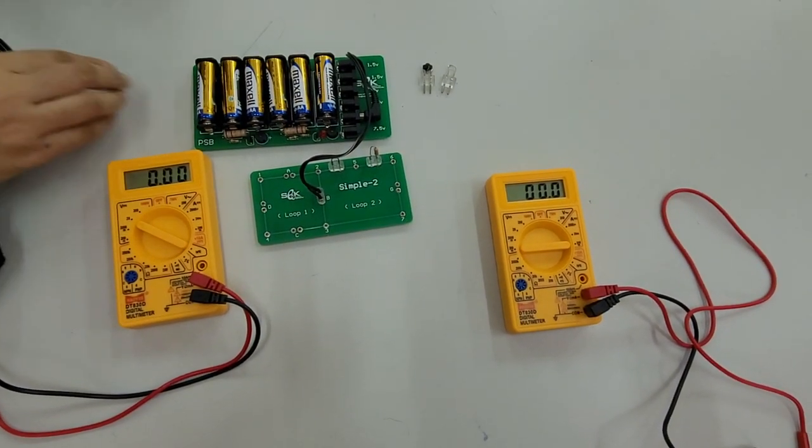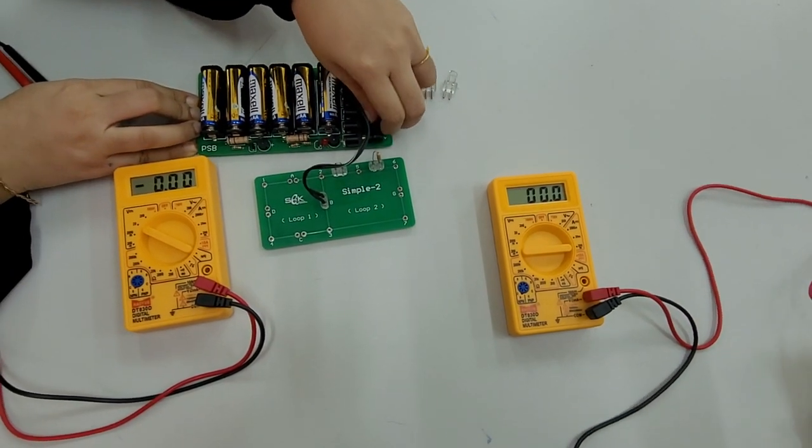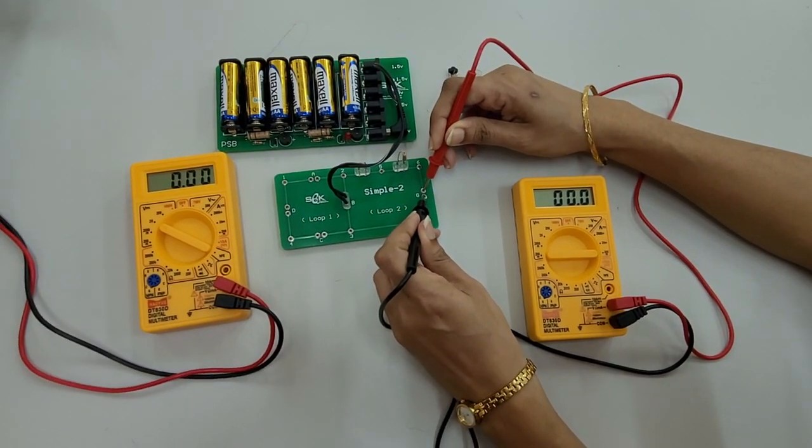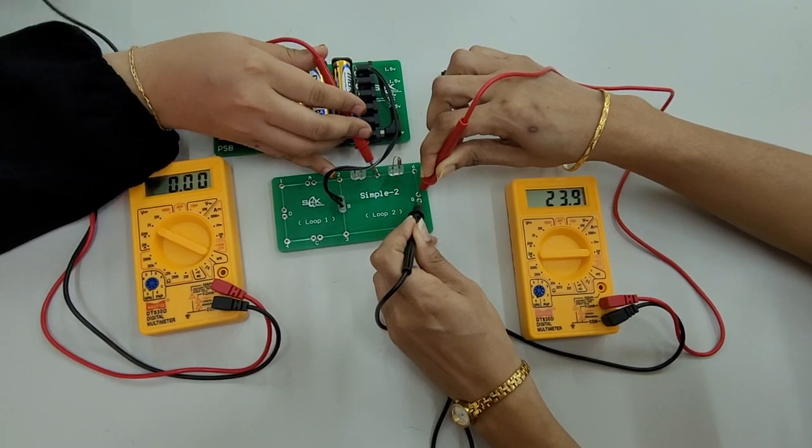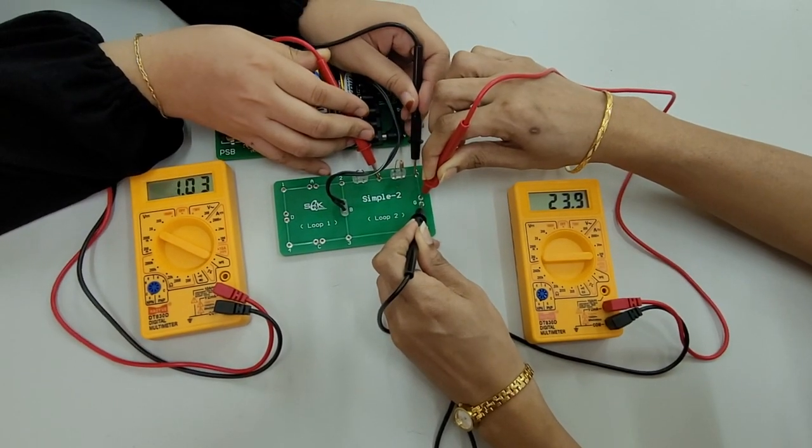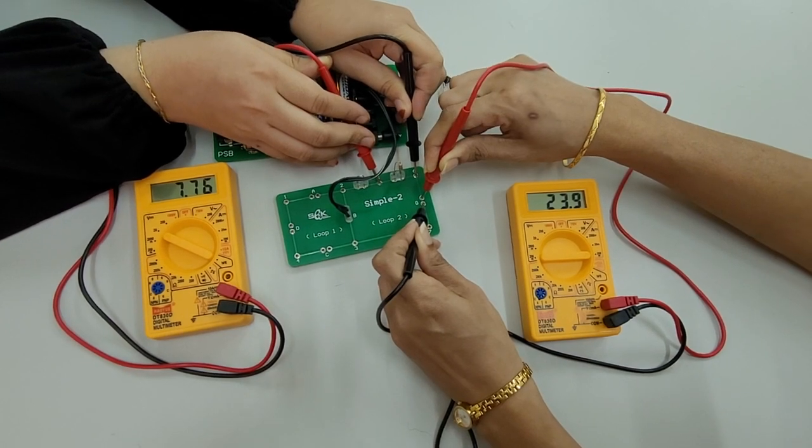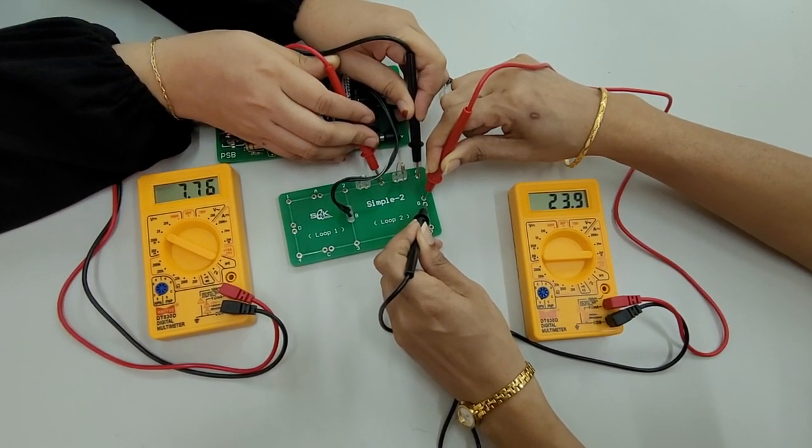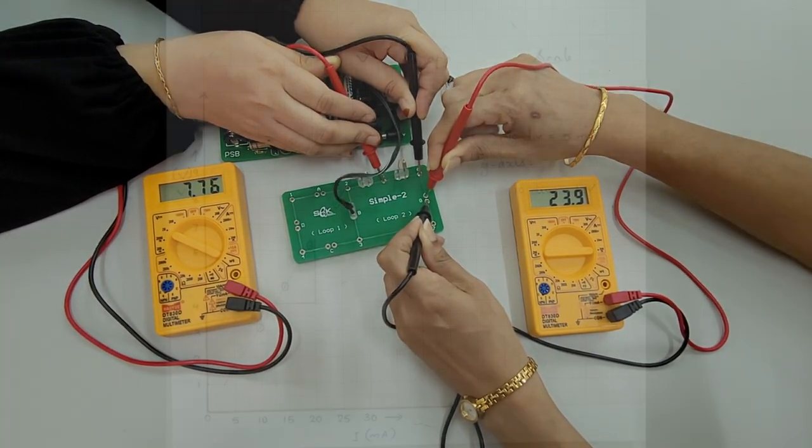Now set the voltage in the PCB at 7.5 volts and record the current reading in the first DMM in milliampere and voltage reading in volts in the second DMM. The recorded readings are 23.9 mA for ammeter and 7.76 volts in the voltmeter reading.